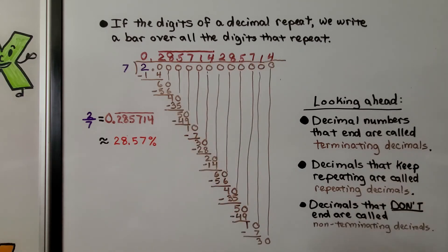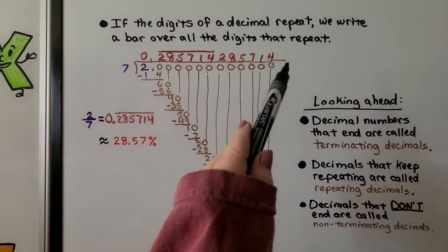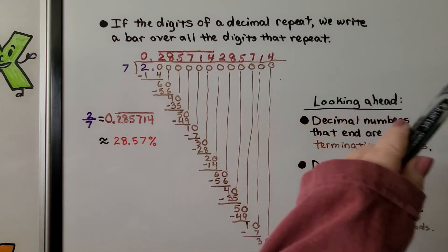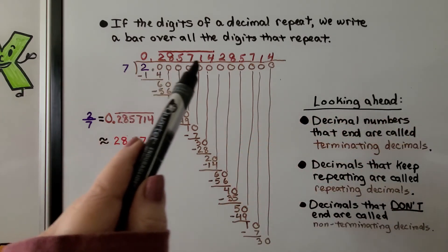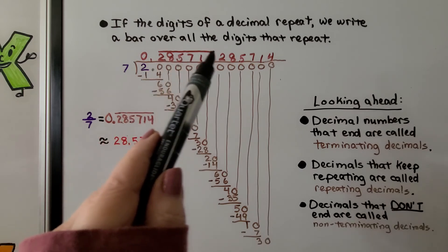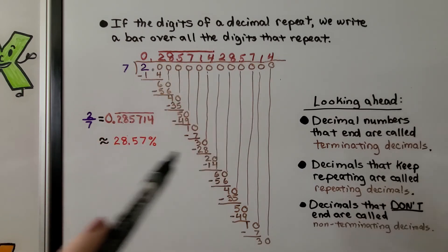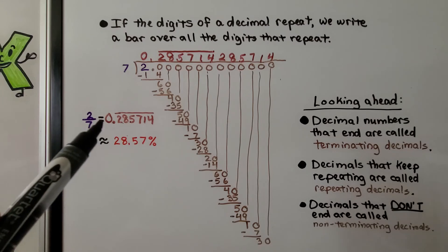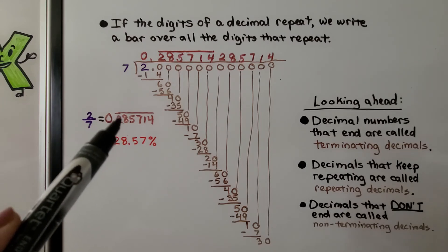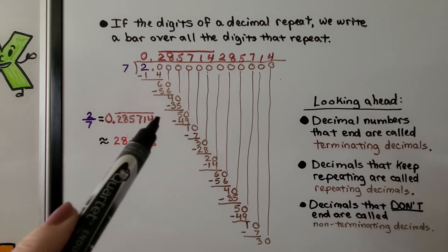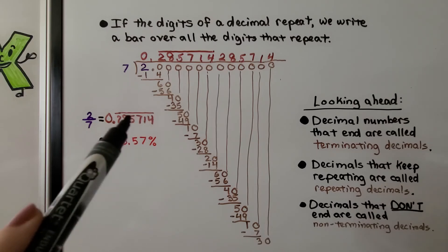If I went down the board and kept dividing, I would get 2, 8, 5, 7, 1, 4 again and again. So these digits repeat. These six digits just keep repeating. So we don't need to write all of these. We just write that two-sevenths is 0.285714 with a bar over the top to show that these are repeating.